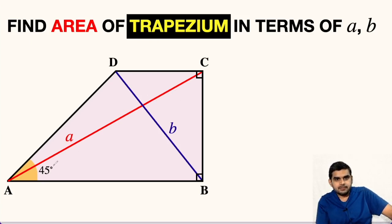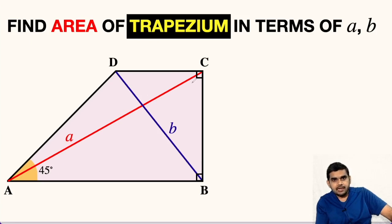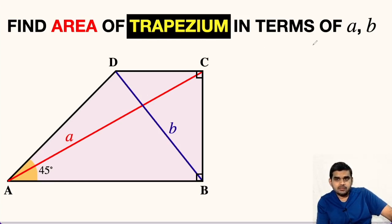In this question, a trapezium ABCD is given. AC and BD are its diagonals and their lengths are small a and small b respectively. Internal angle B is 90 degrees and angle C is also 90 degrees, while angle A is given as 45 degrees. We are asked to find the area of this trapezium in terms of small a and small b.